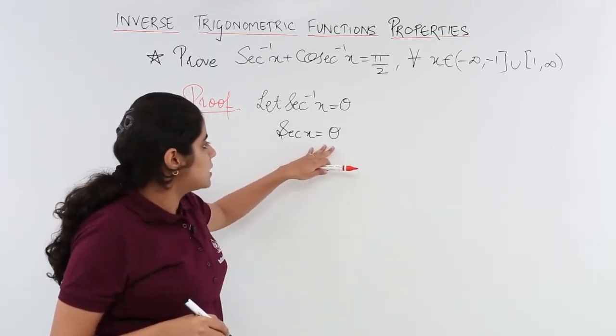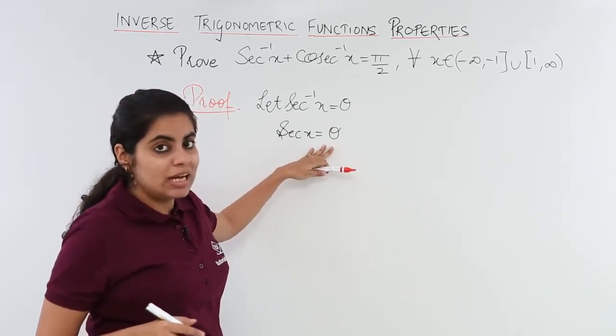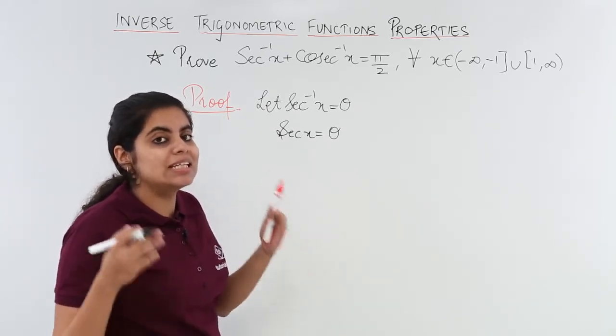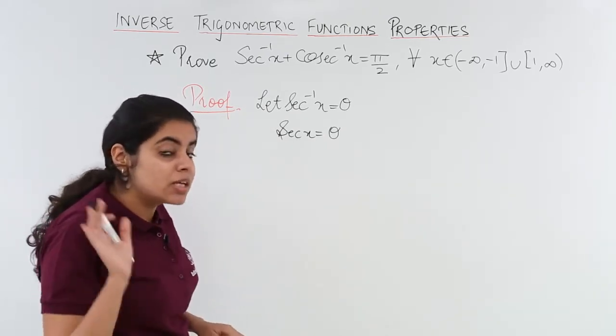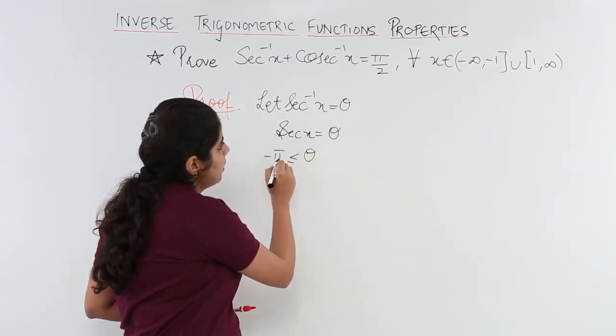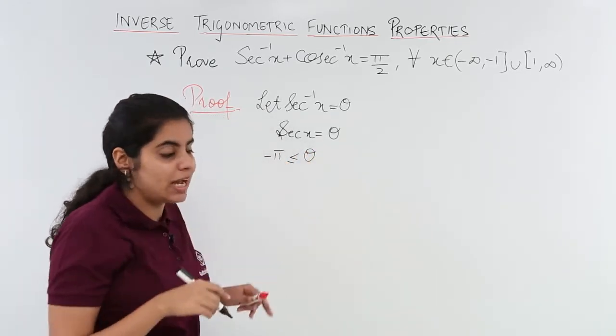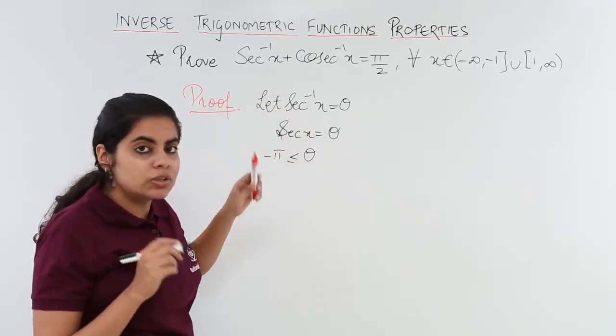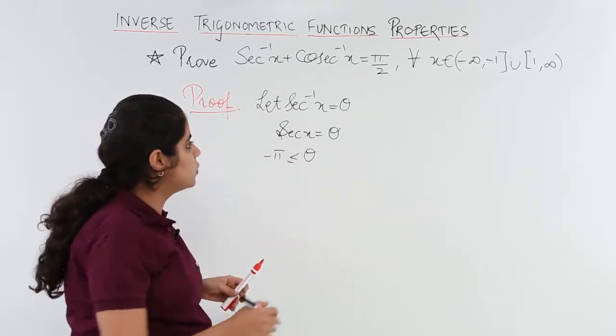Now this step of sec x = θ is not of any use if I don't know what is the interval in which θ lies. So I know that θ lies in -π/2 to π/2 for sine and cosine questions, but here it is secant and cosecant.